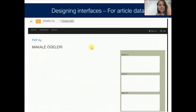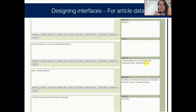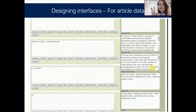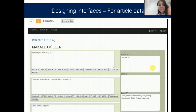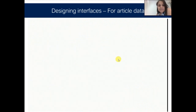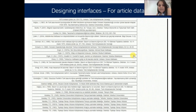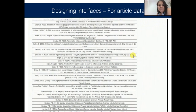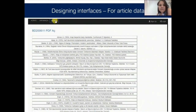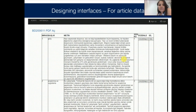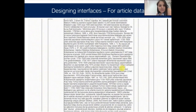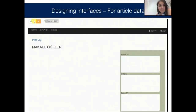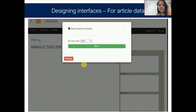Here is the interface for article data — there are two different journals in library and information science, and you can collect the metadata information in this field. The second part is for references, where all references are listed. This is the Turkish version of this, but we are trying to create a new system for English and Polish languages. These are the full texts of the documents.